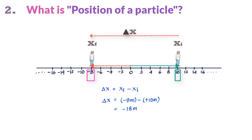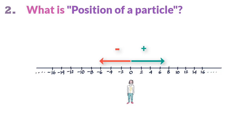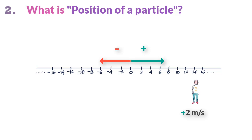A positive answer always indicates displacement in the positive x-direction. Displacement is a vector quantity. Since in straight line motion a particle can move in only two directions — left or right — a plus or minus sign is sufficient to indicate the direction of the vector. It is a positive vector if it moves in the positive x-direction and a negative vector if it moves in the negative x-direction. The sign alongside the magnitude indicates the direction of the vector.